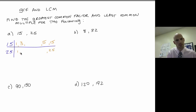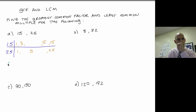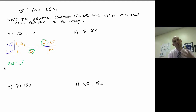Now let's look at 25. The factors are 1 and 25 — 2, 3, and 4 don't go in, but 5 does: 5 times 5. So my greatest common factor — I look for the biggest common one — and it's 5.